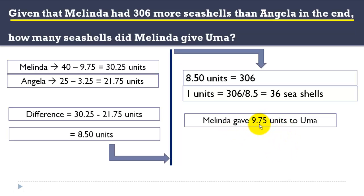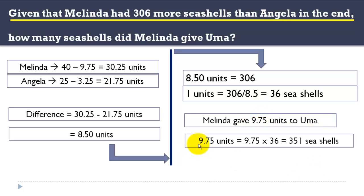Melinda gave 9.75 units to Uma. The question asks how many seashells Melinda gave Uma. Since 1 unit equals 36 seashells, 9.75 units equals 9.75 times 36, which equals 351 seashells. That is the amount of seashells Melinda gave Uma.